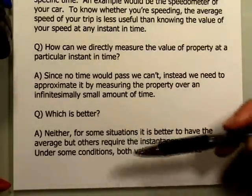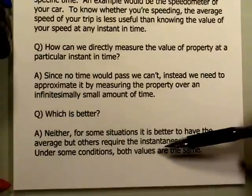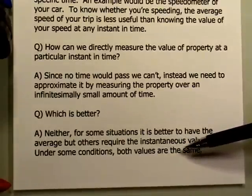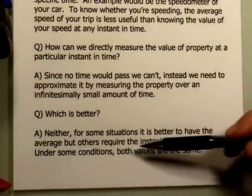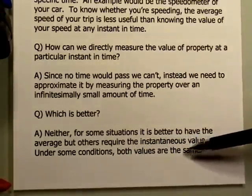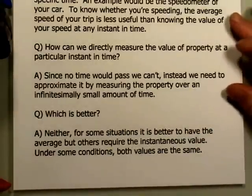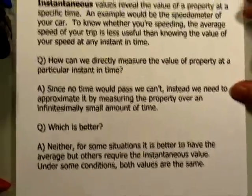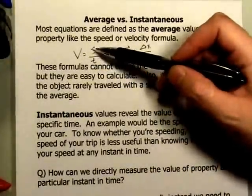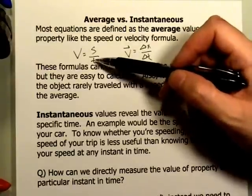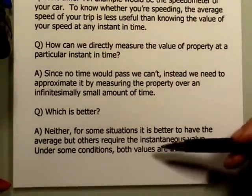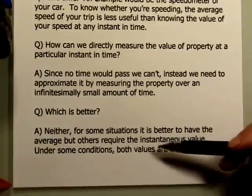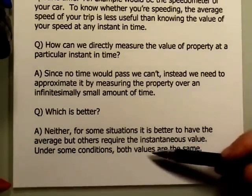The most important thing about which value is better is that there are some conditions under which both values would be exactly the same. Think about under what condition the values might be exactly the same. We want the values to be the same because some instantaneous things we might want to calculate — not just velocity, but distance or travel time — involve instantaneous rather than average values. So think about what condition would allow you to consider both the average and the instantaneous values to be the same.